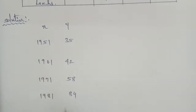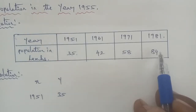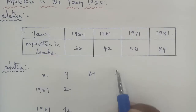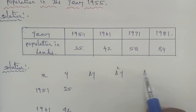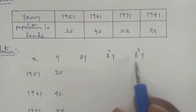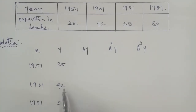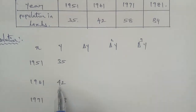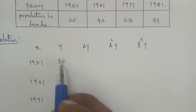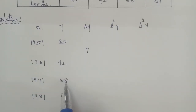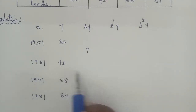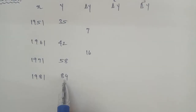We set up the difference table with columns x, y, Δy, Δ²y, and Δ³y. We have four data points. Computing first differences: 42 - 35 = 7, 58 - 42 = 16, 84 - 58 = 26. These are the Δy values.